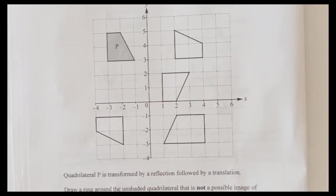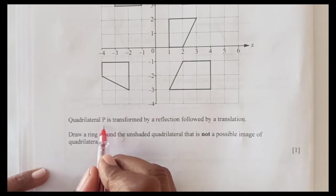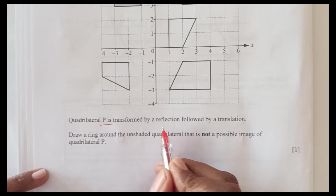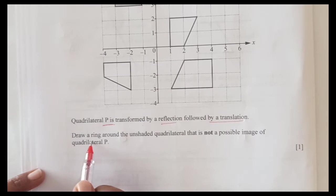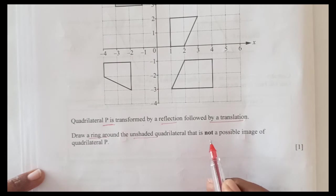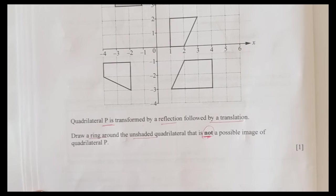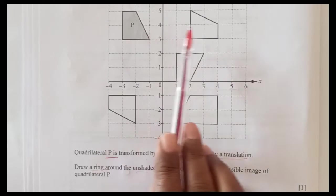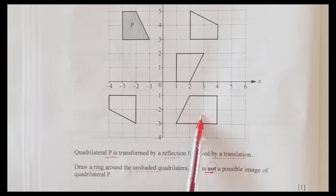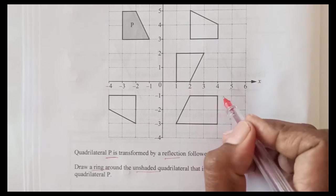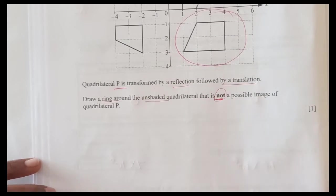Here is a quick question. Five quadrilaterals are shown on the grid. You can see the quadrilaterals here. Quadrilateral P is transformed by reflection followed by a translation. Draw a ring around the unshaded quadrilateral that is not a possible image of quadrilateral P. If you look carefully all these 4 shapes have same size. This is the one which is different which is enlarged, so this cannot be the answer, which is not the possible image.